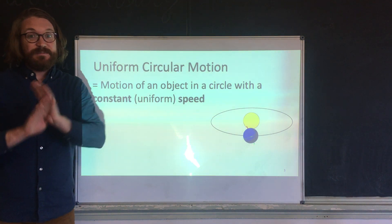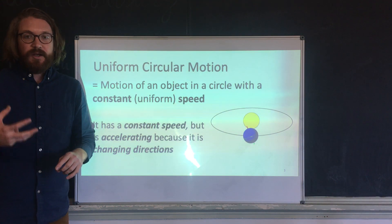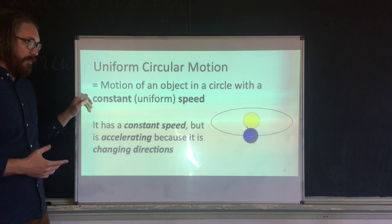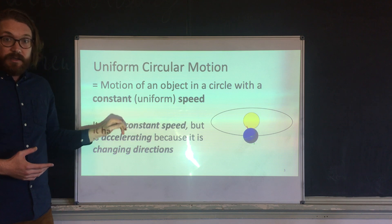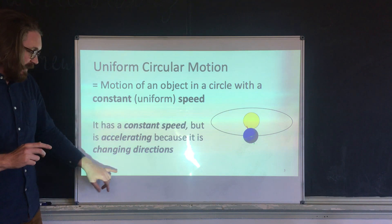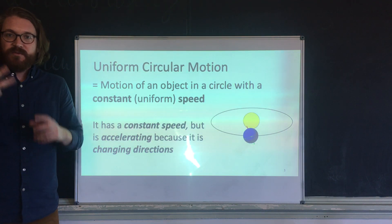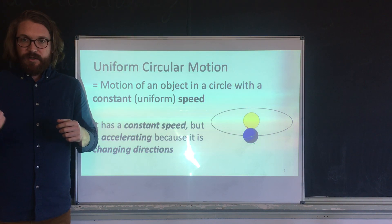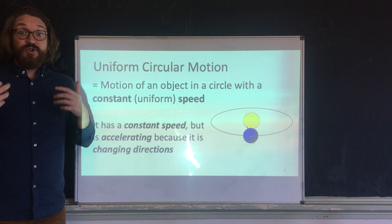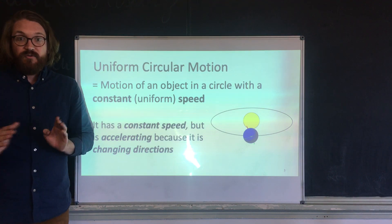The object has a constant speed — it does not change — but here's the trick: in order for there to be centripetal force, there has to be acceleration. Even though the speed is constant, the object is accelerating because it's changing direction. Velocity is speed with direction, so a change in direction is also acceleration.